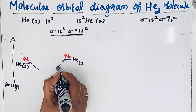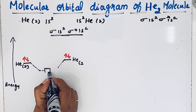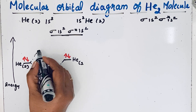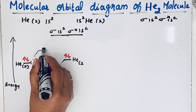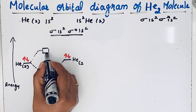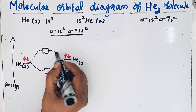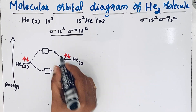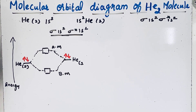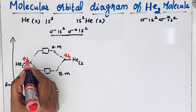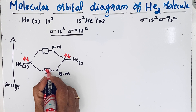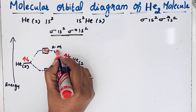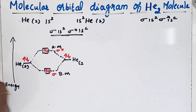The low energy bonding molecular orbital is shown at the lower level, and the high energy antibonding molecular orbital is shown above it. We can show sigma 1s with two electrons and sigma star 1s with two electrons, labeling this one as sigma and this one as sigma star — the antibonding molecular orbital.